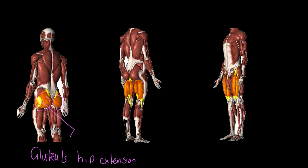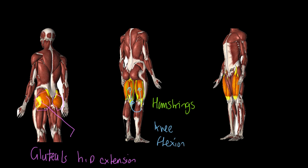These muscles at the back of the upper leg are the hamstring group — let's just refer to them as the hamstrings. When they contract and shorten, they flex the knee — that's knee flexion. Of course, they have a pair, as most skeletal muscles do. Notice there are three muscles in each of those groups, though I'm not going to name them here — that's for future study.